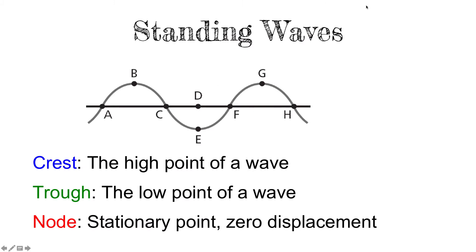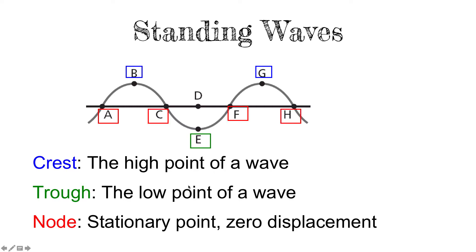Let's look at the details of a standing wave. At points B and G, these are called crests — the highest point of a wave. At point E, these are called troughs — the lowest point of a wave. We like to call these antinodes. So the highest and lowest points are called the antinodes, and the points that exist on the line of equilibrium, which are the points that don't really move, they're called nodes — they are stationary points, a point of zero displacement.